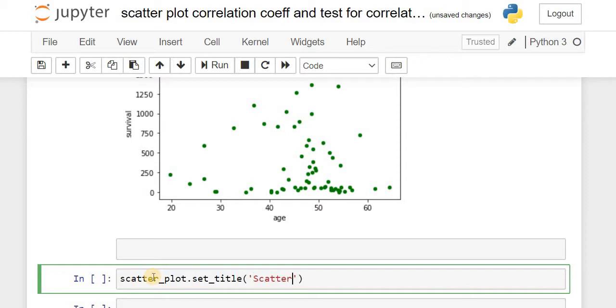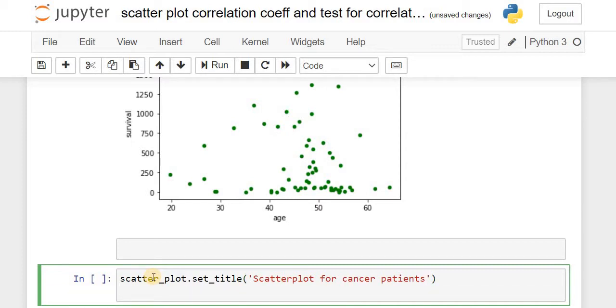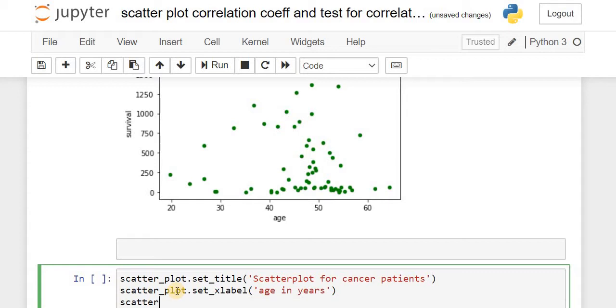I want the x-axis to be labeled as age in number of years, so I will give the command set_xlabel, within brackets, within quotes, 'age in number of years.' Similarly, we'll rename the y-axis using set_ylabel, and here the label is 'survival after surgery in days.'